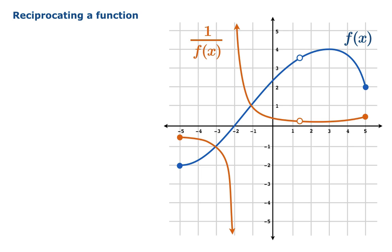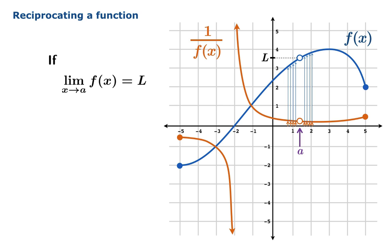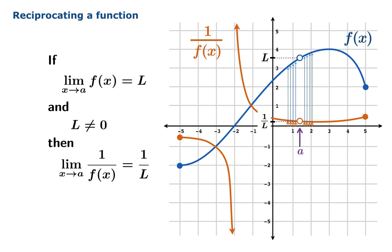Let's try to distill a limit law from this example. We've introduced some behavior at the argument a — a is not in the domain of f, but the limiting value as x approaches a does exist. The limiting value of f is determined by values of the function near a. We reciprocate all these nearby values to find the values of 1 over f. So if the limiting value of f as x approaches a is L, and this is very important — L is not 0 — then the limiting value as x approaches a of the reciprocal of f is 1 over L.